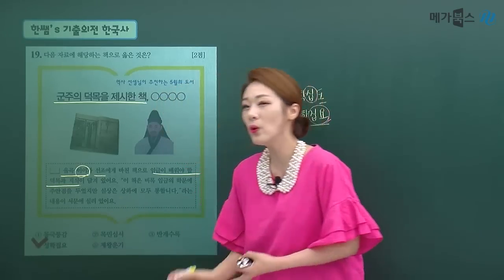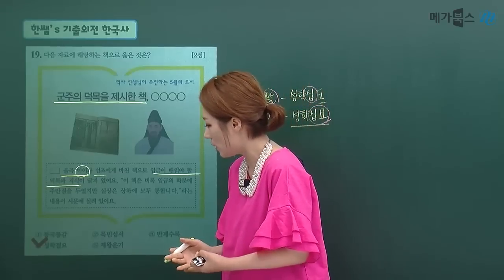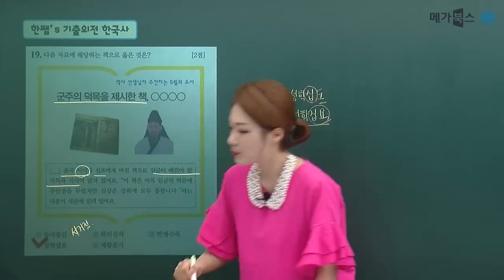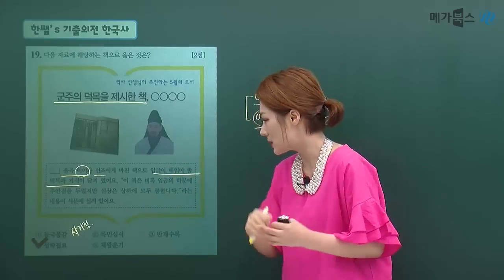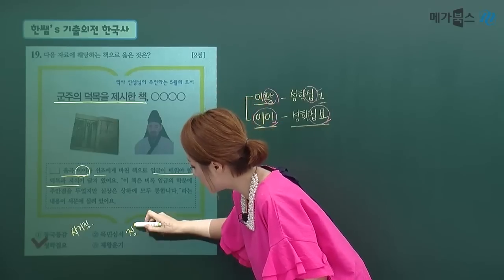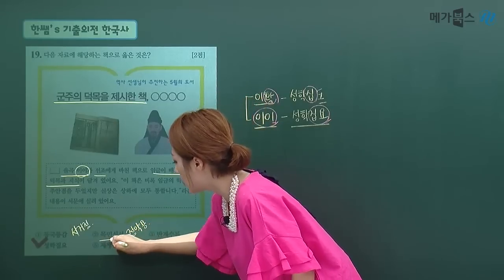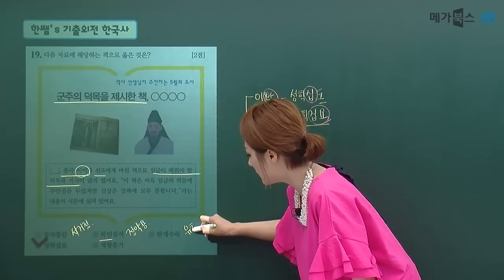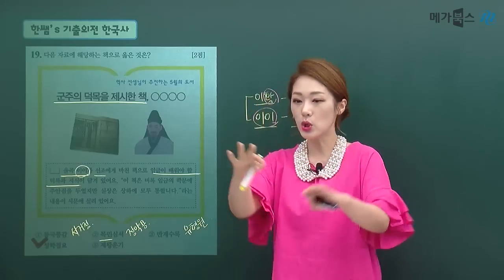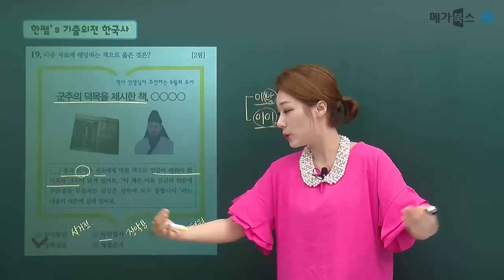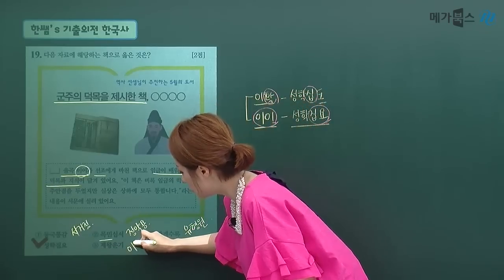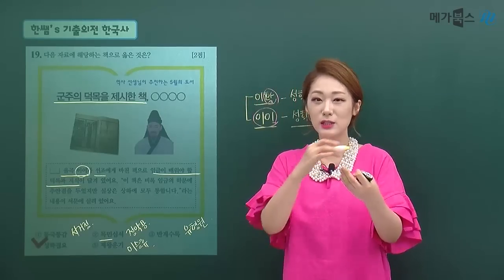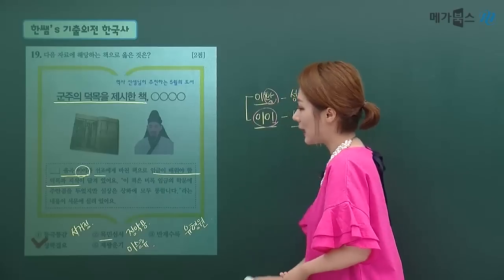나머지 보기를 정리합니다. 동국통감은 조선 성종 때 서거정이 단군조선부터 고려 말까지 쓴 역사서이고, 목민심서는 정약용이 지방관들이 지켜야 할 덕목을 소개한 책입니다. 반계수록은 중농학파 실학자 유형원이 통치제도 전반에 관한 개혁 내용을 담은 책이고, 제왕운기는 고려시대 이승휴가 우리나라와 중국의 역사를 운율시처럼 쓴 역사서입니다.